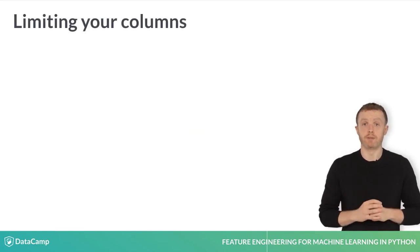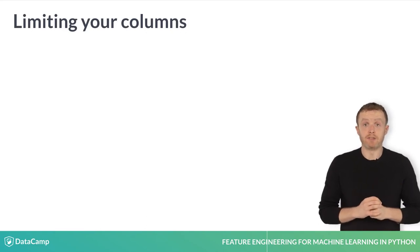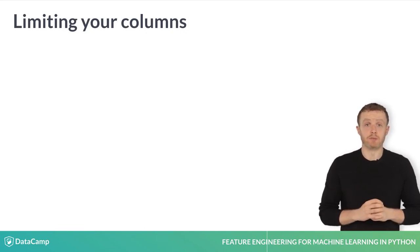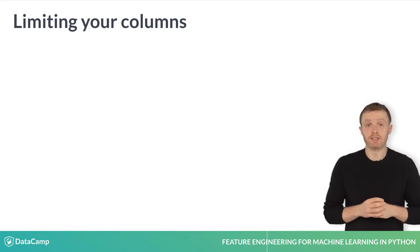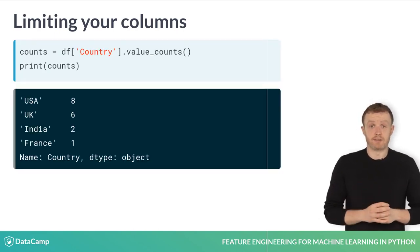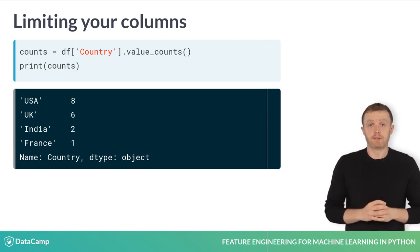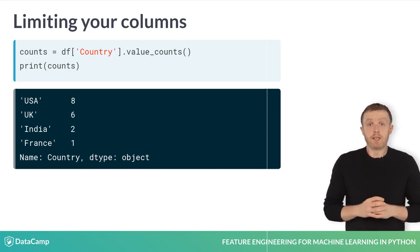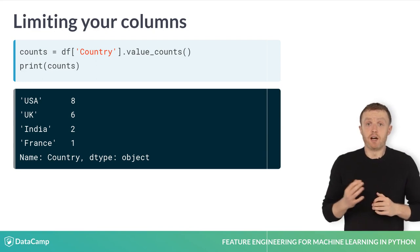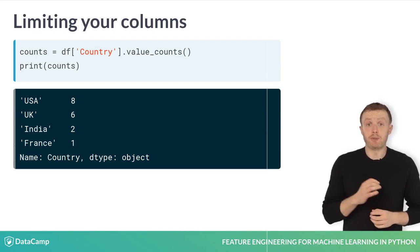However, both one-hot encoding and dummy encoding may result in a huge number of columns being created if there are too many different categories in a column. In these cases, you may want to only create columns for the most common values. You can check the number of occurrences of different categories in a column using the value_counts method on a specific column.